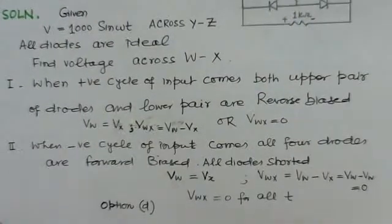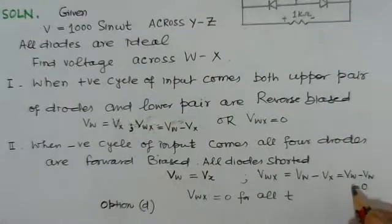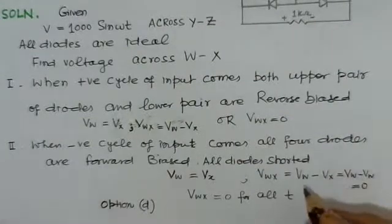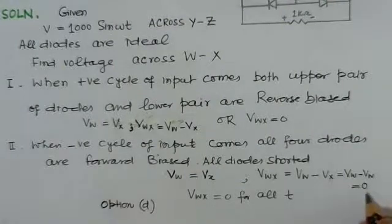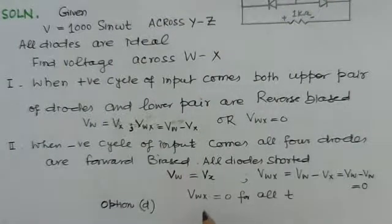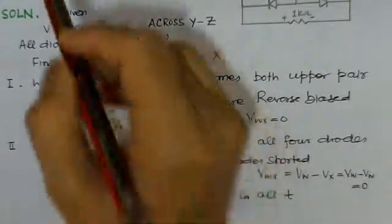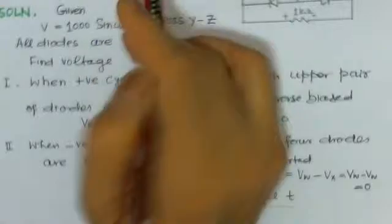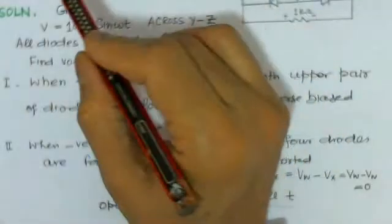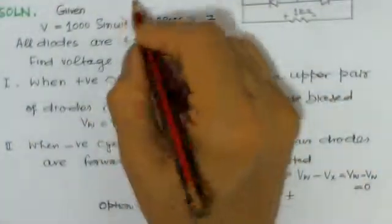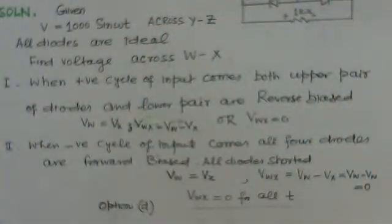So, again here, what we observe is the output, even for the negative half cycle of the input, the output is 0 here. So, that means VWX is 0 for all t. That means, whether input positive cycle or input negative cycle, the output is 0. So, for the entire input signal, the output is 0. So, option D is the right choice here.